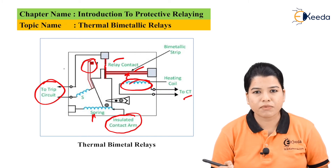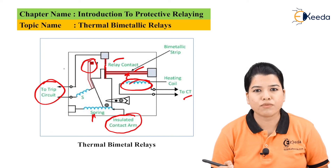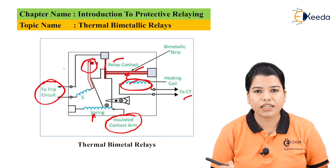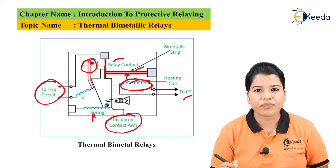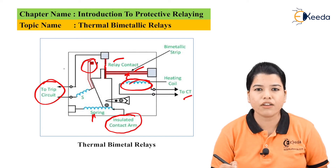Once the trip circuit closes, it sends a signal to the circuit breaker, causing the contacts of the circuit breaker to open. Basically, this relay works on the heat produced due to the increase of current under fault conditions.